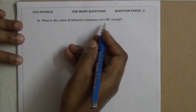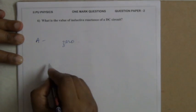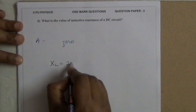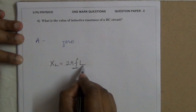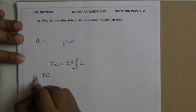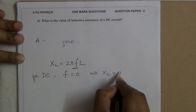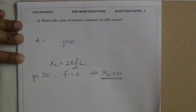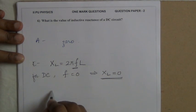What is the value of inductive reactance of a DC circuit? The answer is zero. Inductive reactance XL = 2πfL, where f is frequency and L is the self-inductance of the coil. For a DC circuit, frequency f = 0, which implies inductive reactance XL = 0.